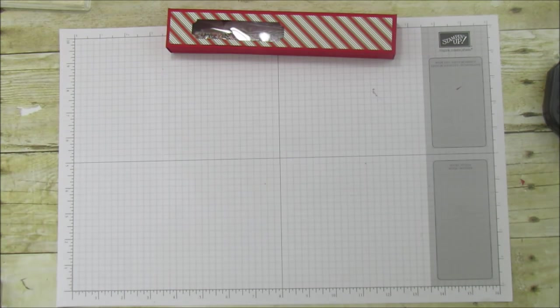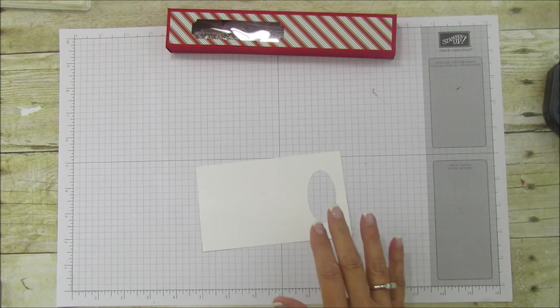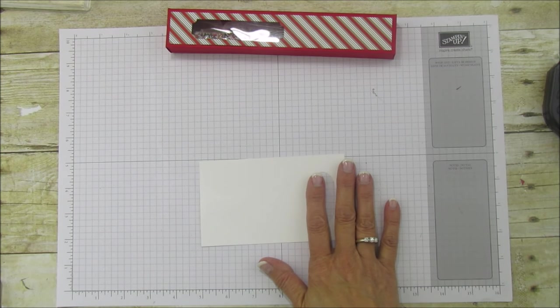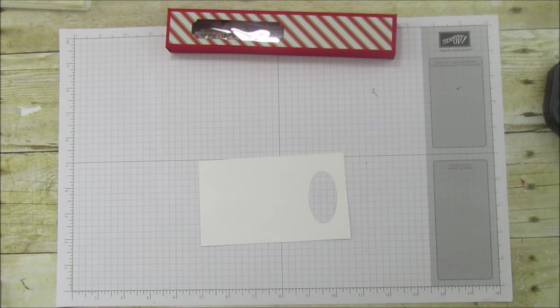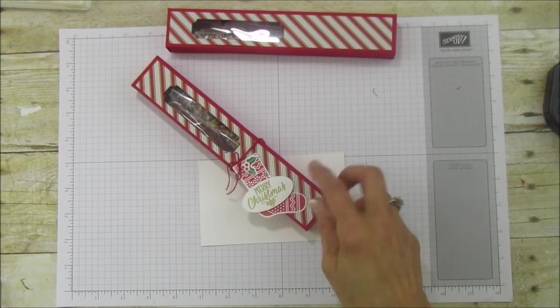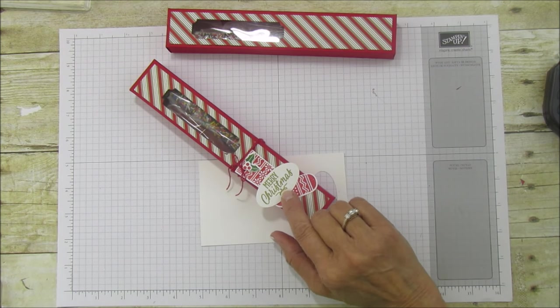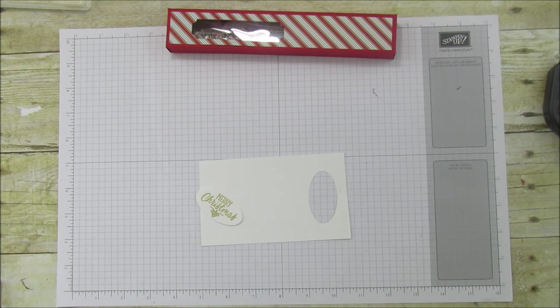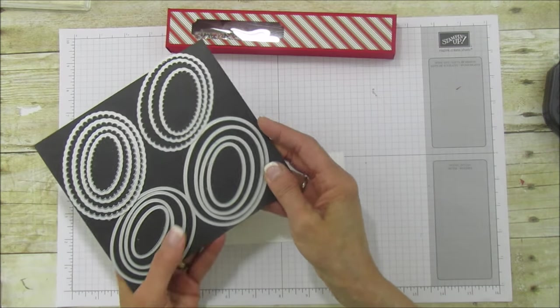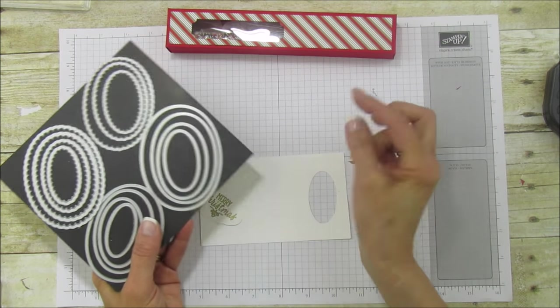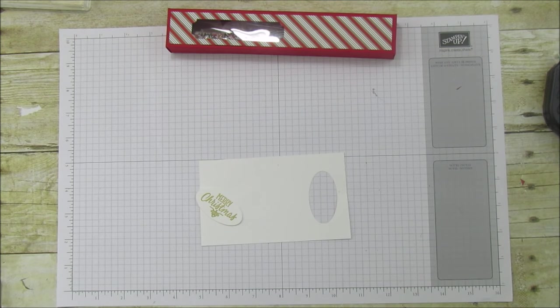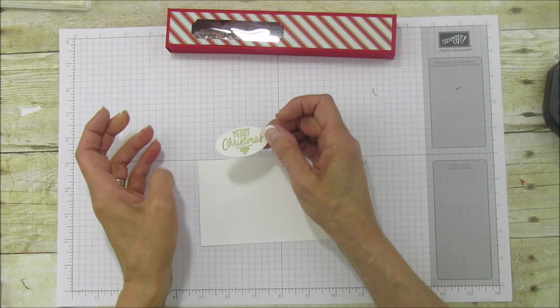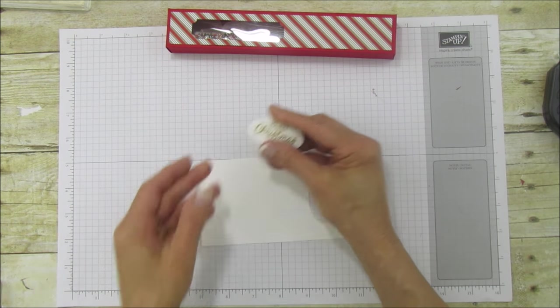Let's set that aside and I'm going to grab some whisper white and we'll do our stamping. I already stamped the Merry Christmas because I'm using Versamark and these are all from the same set. I stamped the Merry Christmas, this one right here, and I used Versamark and I embossed it with our gold embossing powder. Then I used one of our layering oval framelits, this one right here.